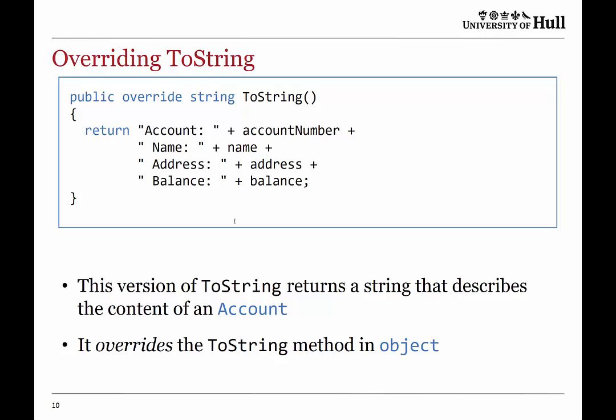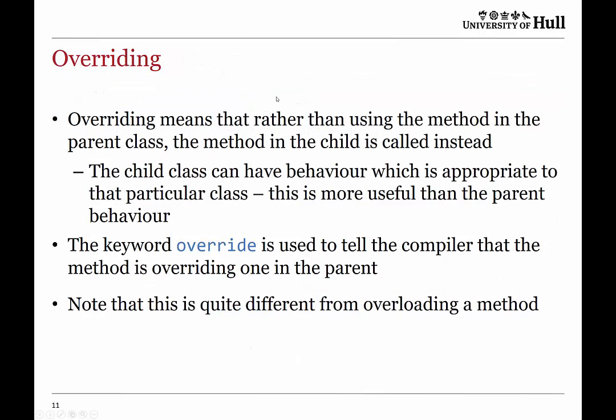Think about the problem we're solving. We want to make our account behave in a useful, friendly way. One way to do that is to replace the toString method with a more applicable version. This is done on the basis of this magical thing called overriding, where overriding basically says: I want to make use of the one specific to me, not the one in my parent.